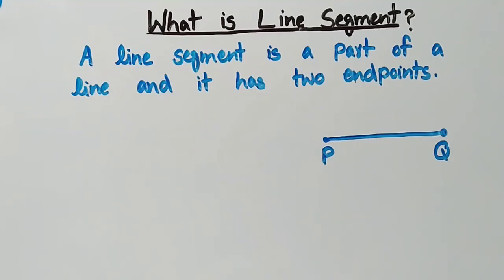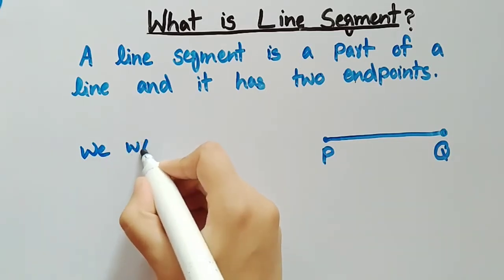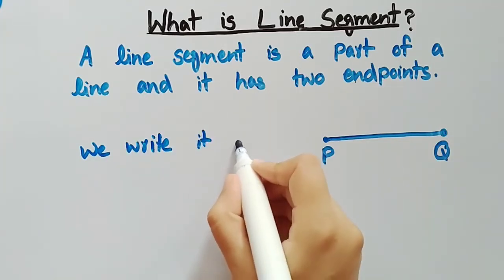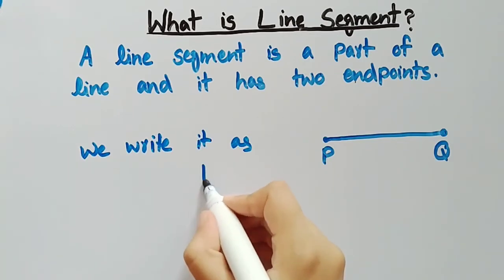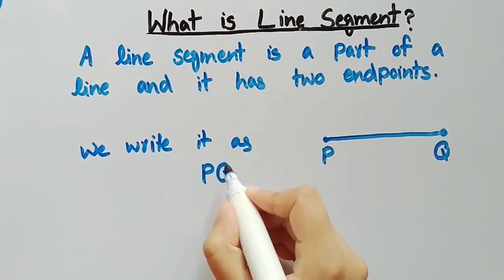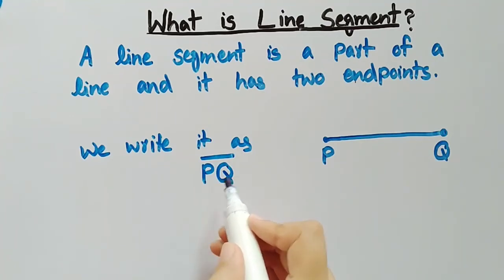Here we can see that PQ is a line segment and we write it as PQ and there is a line above PQ which represents the line segment PQ.